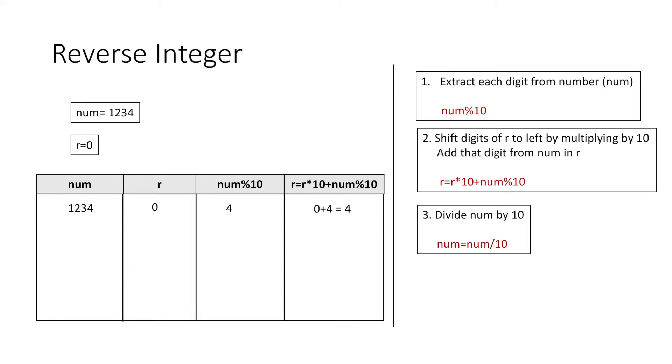In the next step we divide num by 10. Therefore the value of num would now be 1 2 3 and the value of r is 4. Now again we take its modulus with 10 and we get the digit 3. In the next step we multiply r with 10 and add 3 to it, thus we get 43. Now again we divide num by 10.